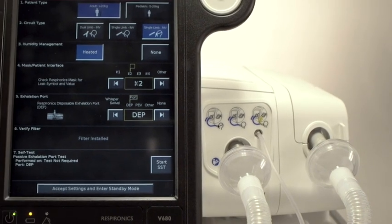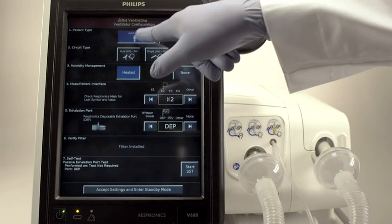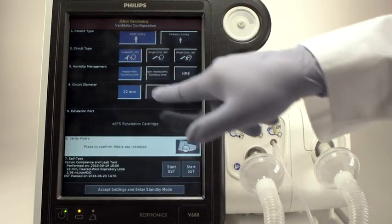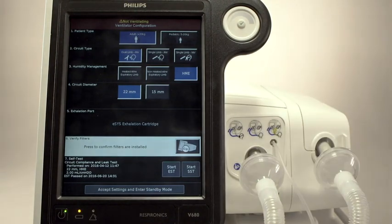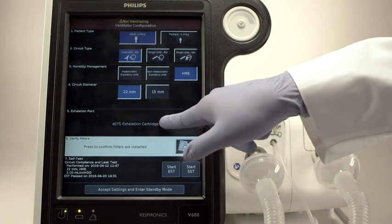This time, let's select Adult Dual-Limb Invasive Ventilation, HME, and a 22-millimeter circuit. Touch the screen button to verify the ESIS cartridge is installed and that both filters are attached.